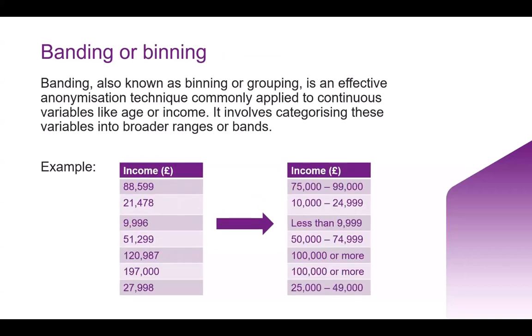A similar technique can be applied to continuous variables like age or income — you can bin those by creating categories within a range. On the left you have the exact income, and on the right you can see those have been binned. It's also worth noting that if you want to compare your data to national population data, you should consider binning it based on ONS categories. Some of those coding frames can be quite useful if you want to do any kind of comparative research.